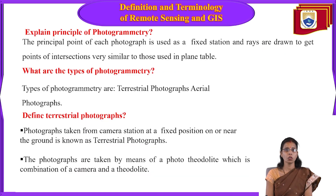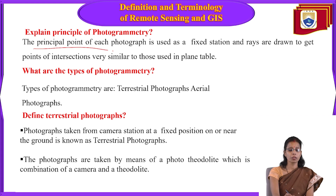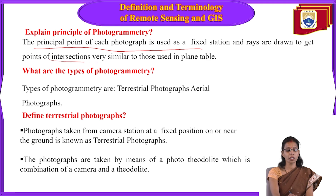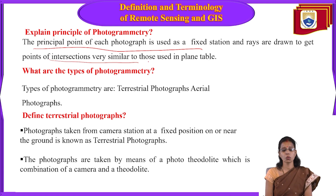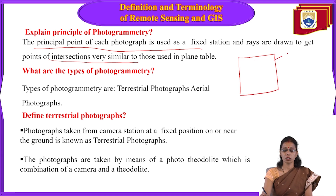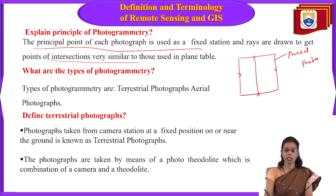The principles of photogrammetry: the principal point of each photograph is used as a fixed station, and lines are drawn to get points of intersection, similar to those used in a plane table. Each aerial photo has fiducial marks on the inner sides; when you join these lines, the center point obtained is called the principal point.